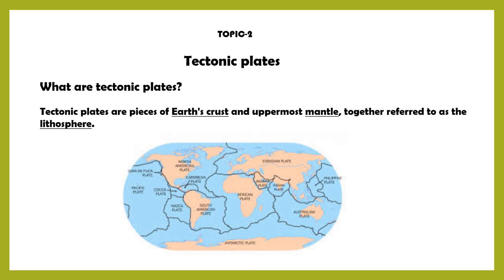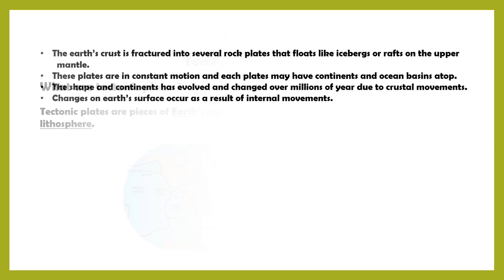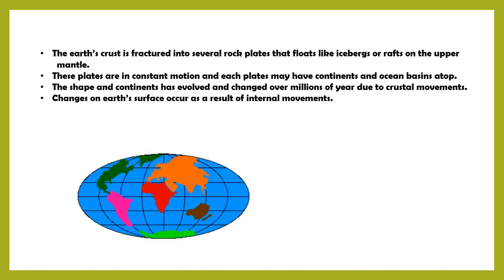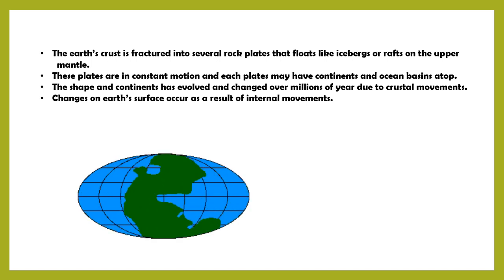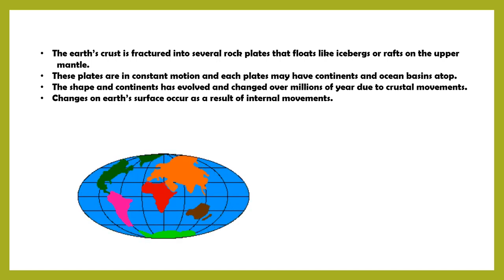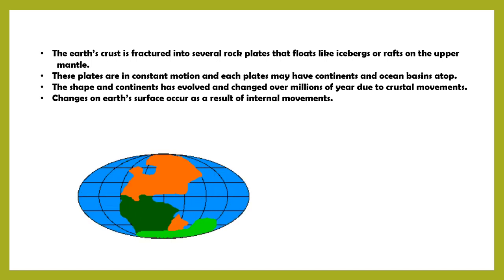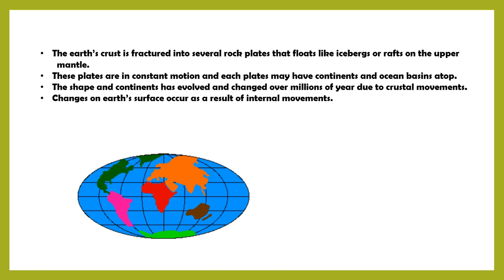Tectonic plates are pieces of earth's crust and uppermost mantle together, referred to as the lithosphere. Earth's crust is fractured into several rock plates that float like icebergs or rafts on the upper mantle. These plates are in constant motion and each plate may have a continent and ocean basin atop. The shape of the continents has evolved and changed over millions of years due to crustal movements.